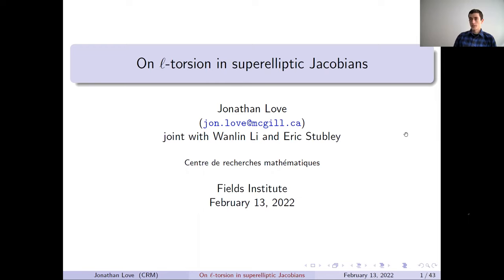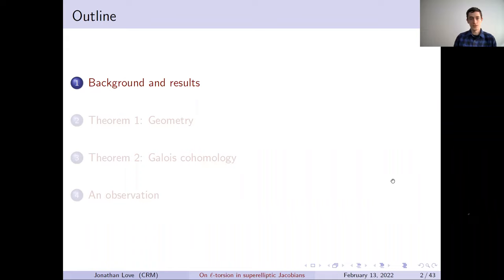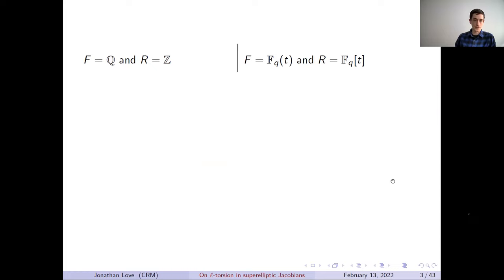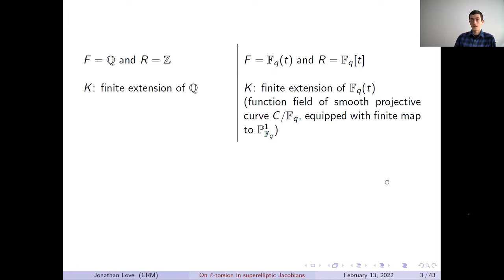I wanted to start by diving into the motivation for the question we're asking. This question is about class groups. I want to compare the number field setting to the function field setting to give insight into the similarities and differences between the two. Throughout, our base field will be either the rationals or FQ adjoint T — rational functions in one parameter — and within here we have a ring: either the integers or polynomials over a finite field FQ.